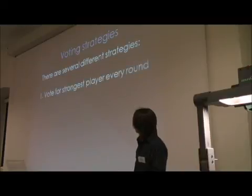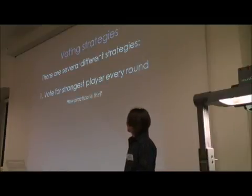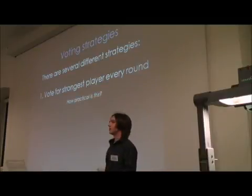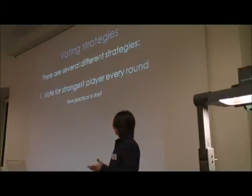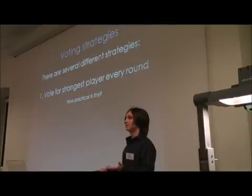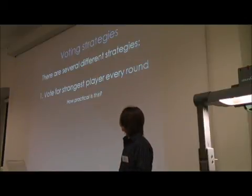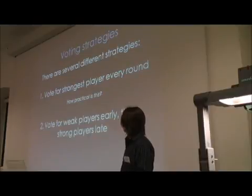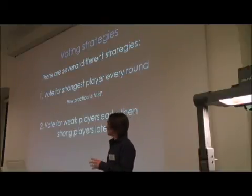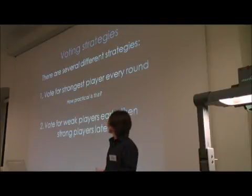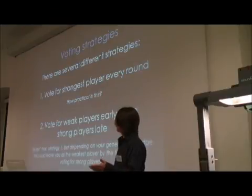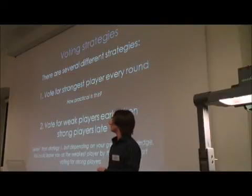There are several different strategies. The most basic is to vote for the strongest player every round — but Anne Robinson would no doubt pick up on this and start grilling you about it, and making yourself a target is the worst thing you can do. Strategy two is to vote for weak players early and then strong players late, keeping strong players in early rounds to build a good jackpot and eliminating them later. However, depending on your general knowledge, this could leave you as the weakest player by the time you start voting off strong players.